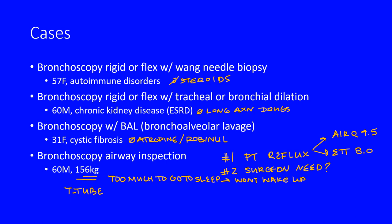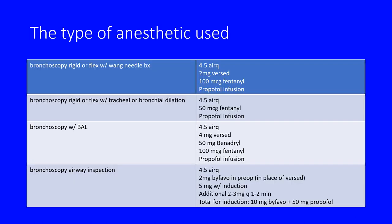We placed an LMA for all of our patients — specifically a 4.5 air-q on everyone, as we need larger-sized LMAs. The first patient got 2mg of Versed in pre-op, then a standard induction: lidocaine, propofol, LMA placement, and a propofol infusion.